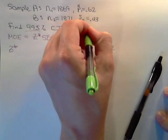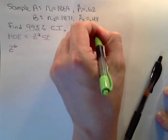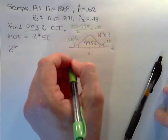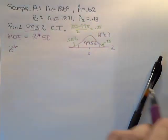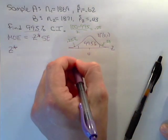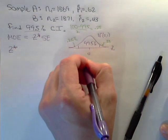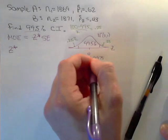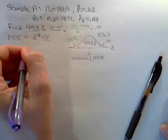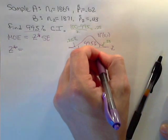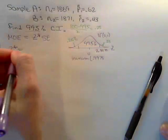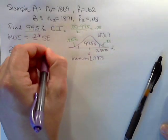How do I get that? 100 minus 99.5 divided by 2 equals 0.25. So the total left-hand proportion is 99.75. I type in the calculator inverse norm 0.9975, and we get our test statistic of 2.8070.